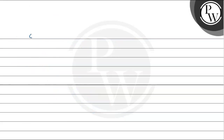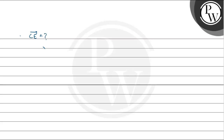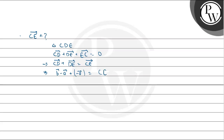We have to evaluate CE vector. In triangle CDE: CD vector + DE vector + EC vector = 0, which implies CD vector + DE vector = CE vector. So CE vector = (b - a) + (-a) = b - 2a. Therefore CE vector = b vector minus 2a vector.